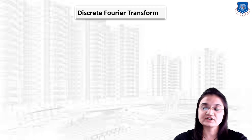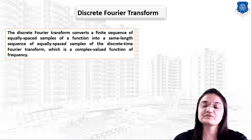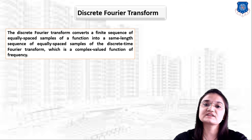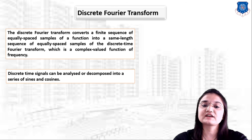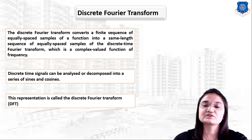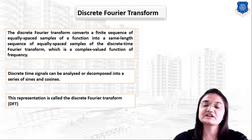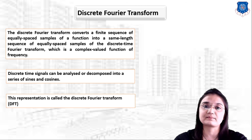The discrete Fourier transform (DFT) converts a finite sequence of equally spaced samples of a function into the same length sequence of equally spaced samples of the discrete-time Fourier transform, which is a complex-valued function of frequency. A discrete time signal can be analyzed or decomposed into a series of sines and cosines — this representation is called the discrete Fourier transform.